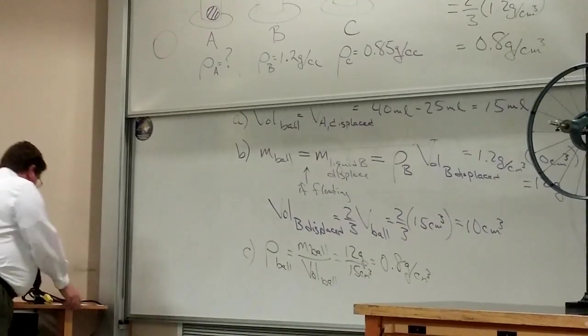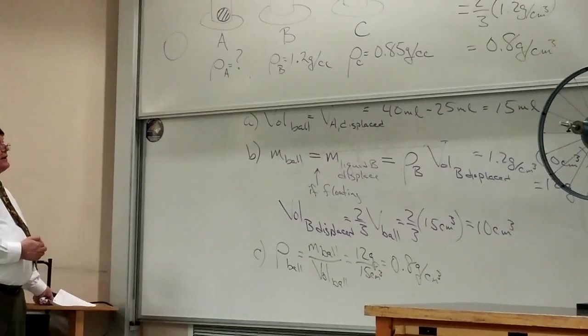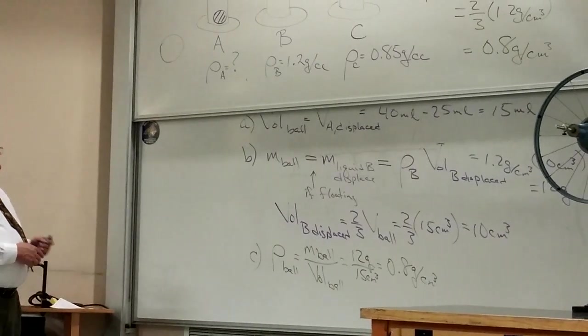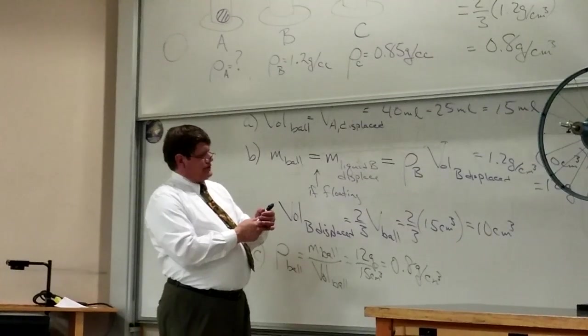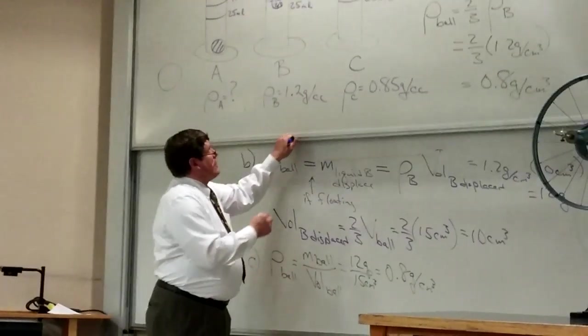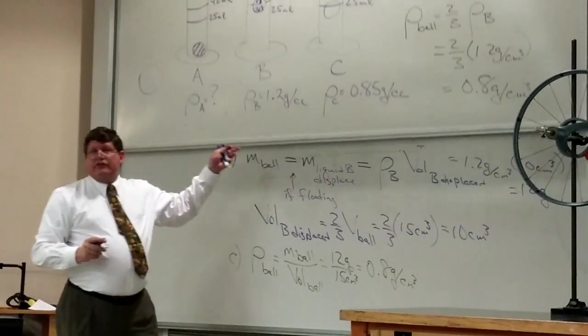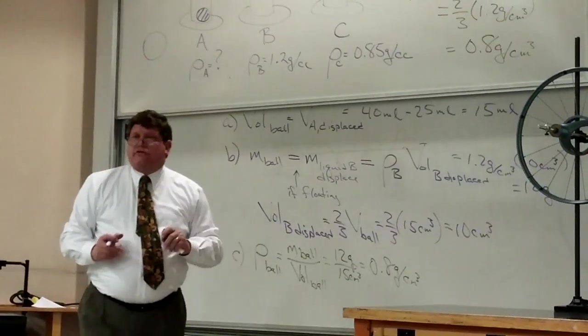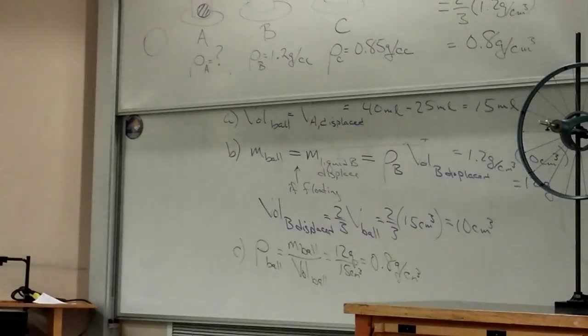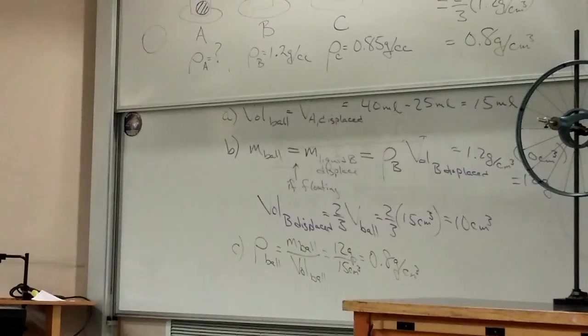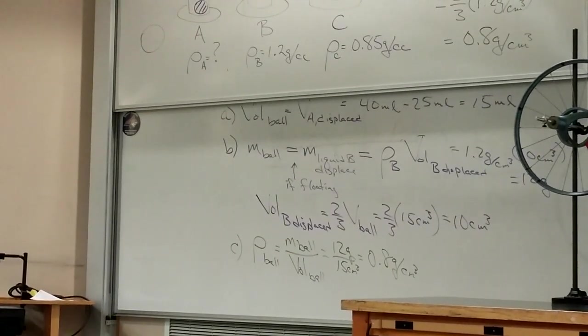Now the next part of this asks us, will the ball float or sink in liquid C? Well, the density of the ball is less than the density of liquid C. And so it is going to float. I didn't ask this on the exam where this was a question. I could have. What fraction of the ball will be submerged when it floats in liquid C? Tell your neighbor Nimrod how you would solve that problem.